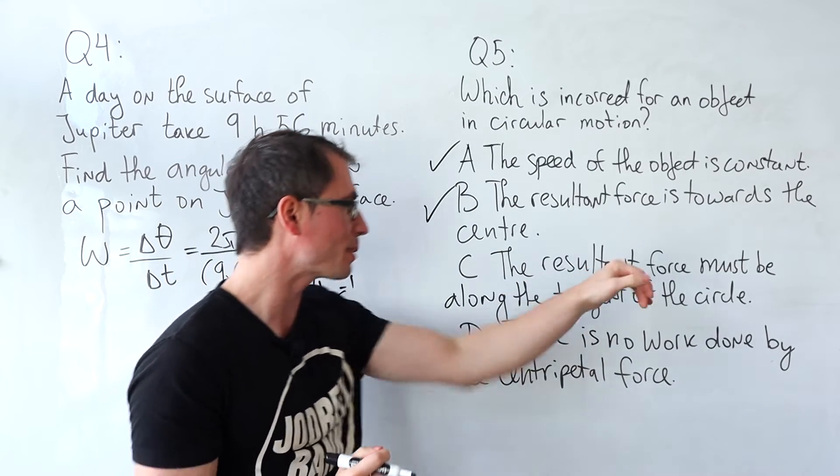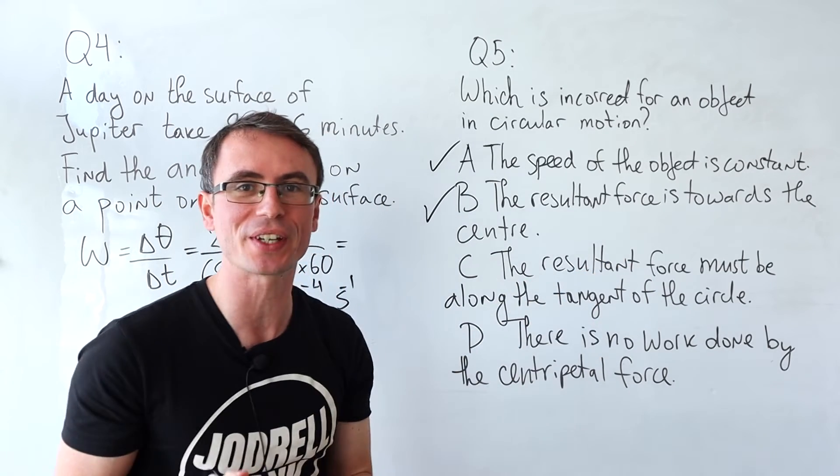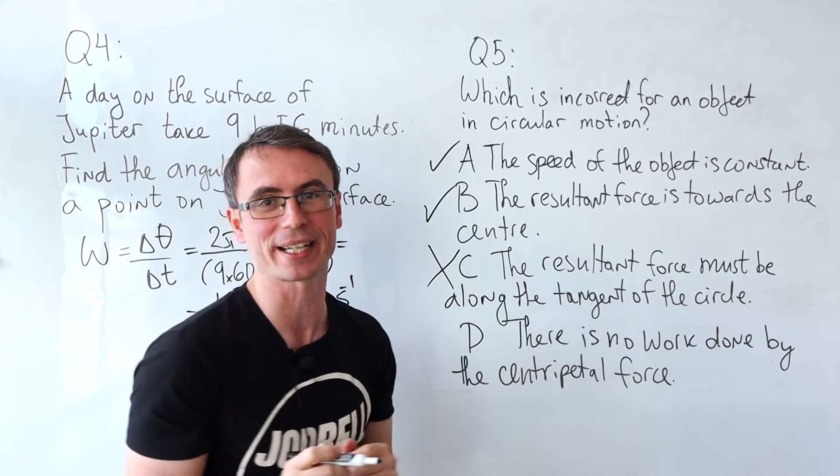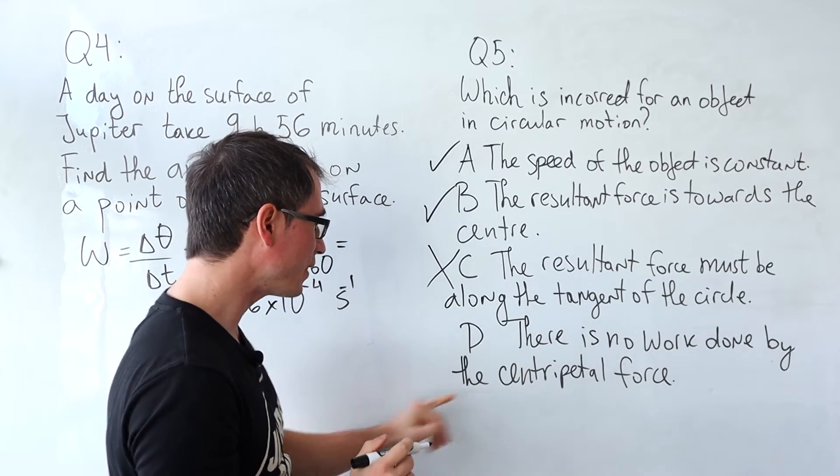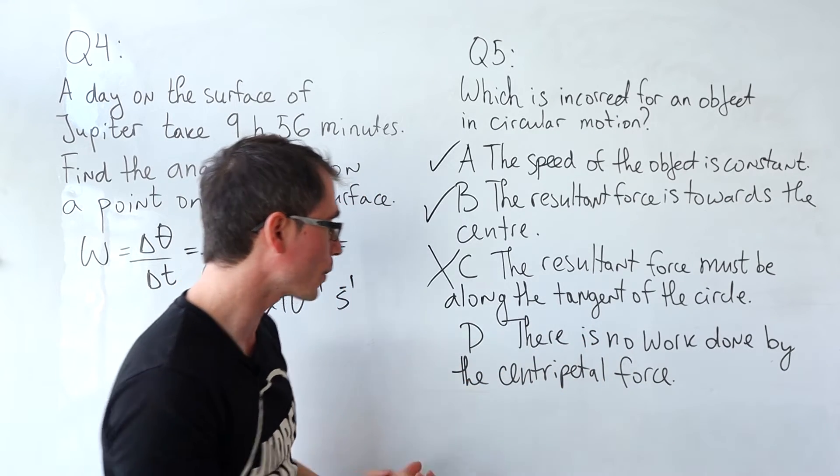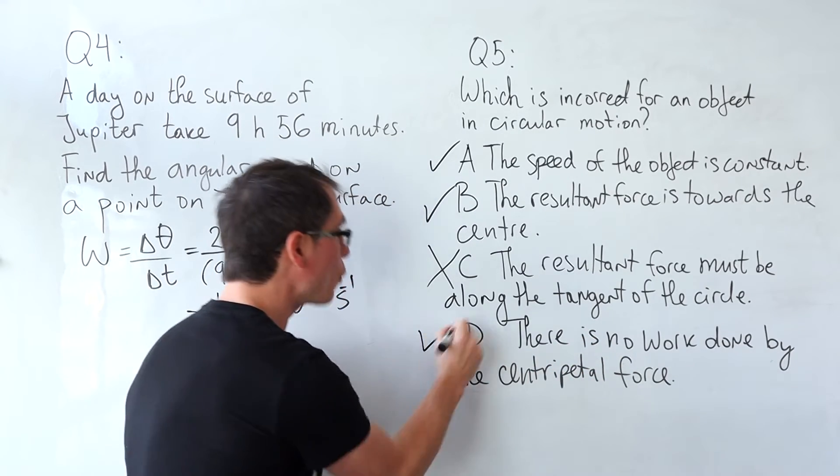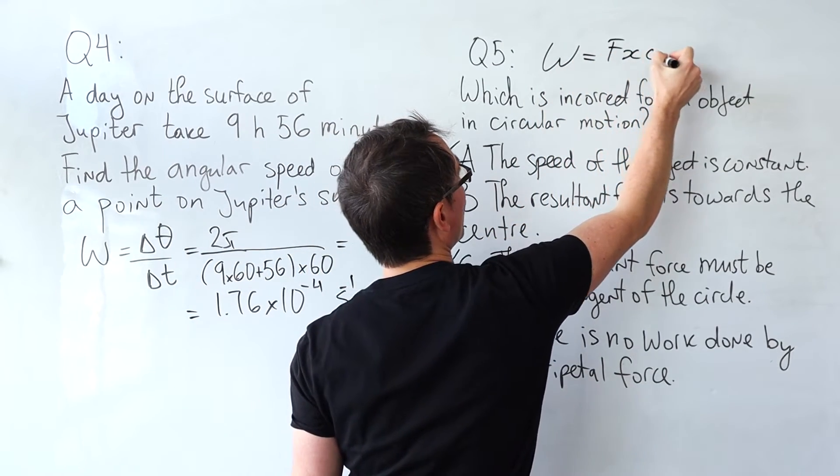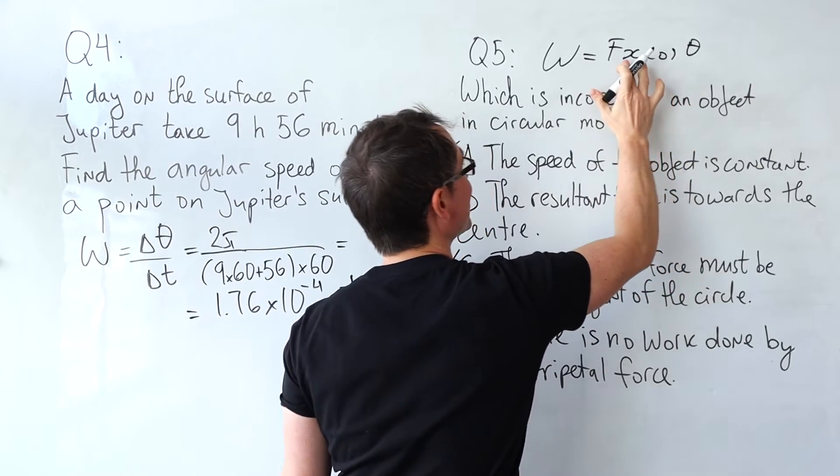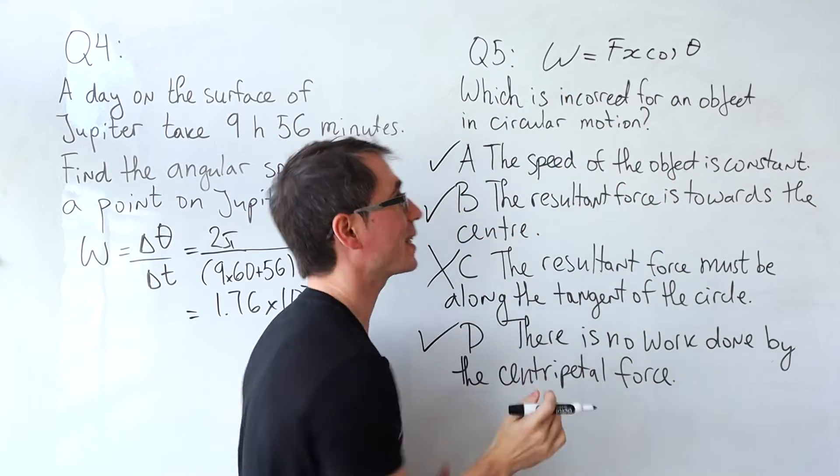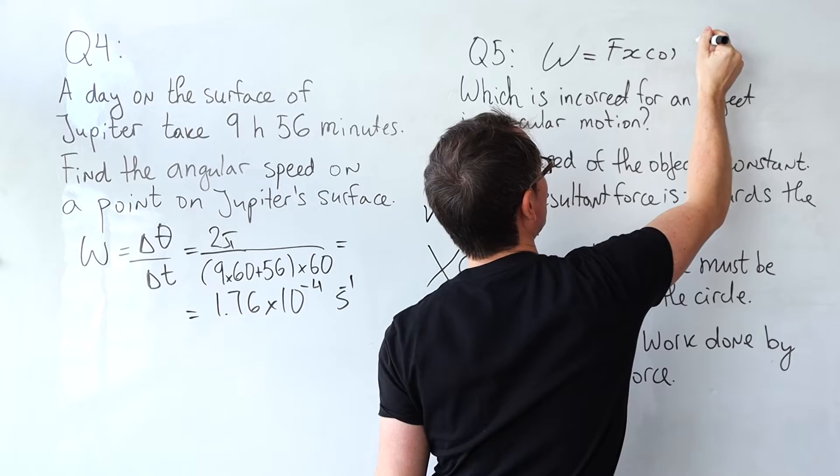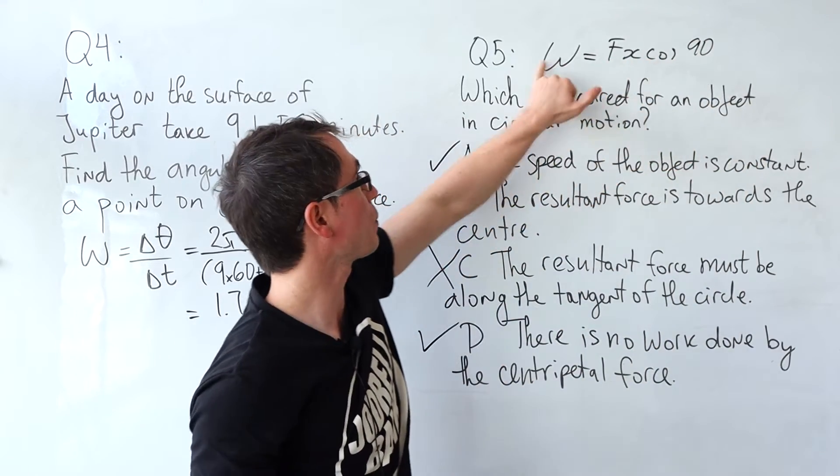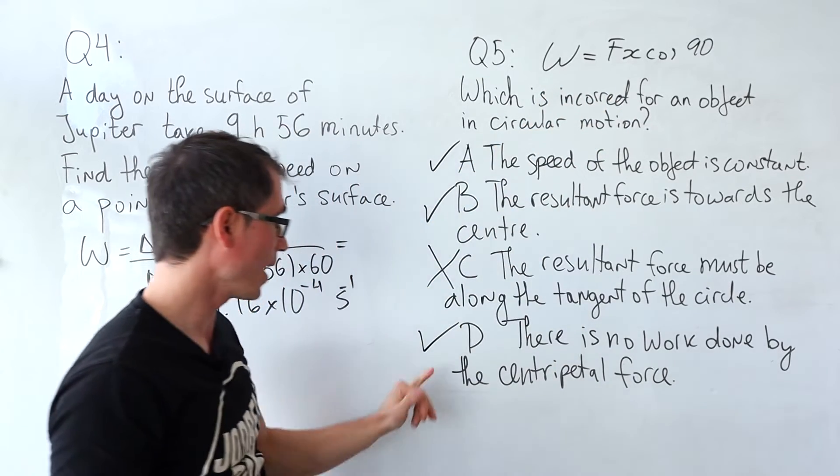C, the resultant force must be along the tangent of the circle. This is a very common misconception and this is incorrect. Let's also discuss D, there is no work done by the centripetal force. This one is also correct. Remember work done equals f x cos theta and the angle between the displacement and the force is actually 90 degrees because they are perpendicular. Cos of 90 is just zero which means that the work done is zero and this one is correct.